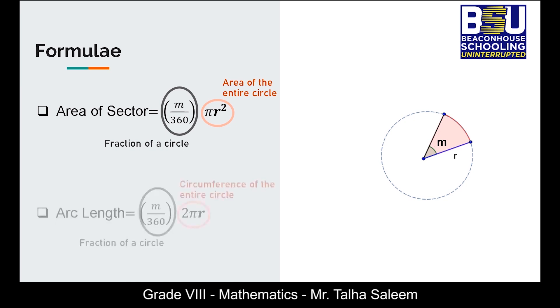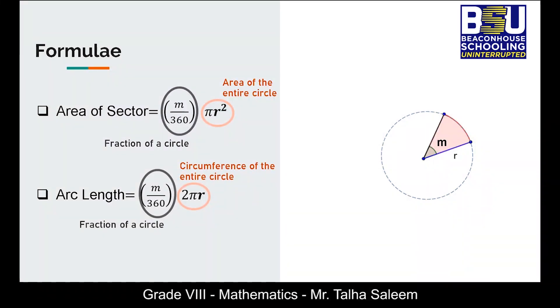The same fraction m over 360 when multiplied by the circumference that is 2πr gives us the value of arc length. The formula for arc length is m over 360 degrees into 2πr.